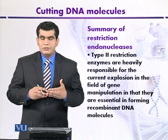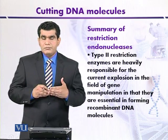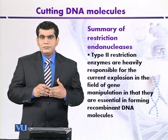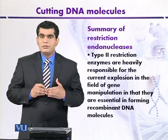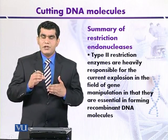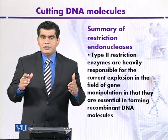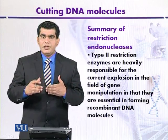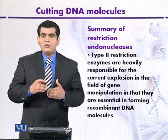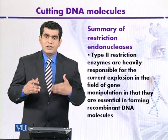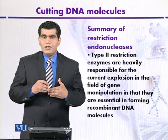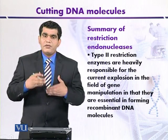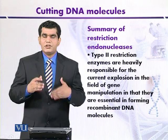It also depends on how much time is given for the digestion of the source DNA. If more time is given, the enzyme will get more time to digest the DNA, so the length of fragments will be less. But if partial digestion occurs — meaning less time is given — the restriction enzyme will not get enough time to attack the source DNA, so the length of fragments produced will be high. This is called partial digestion.